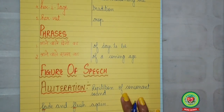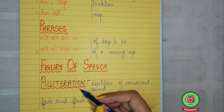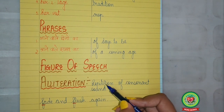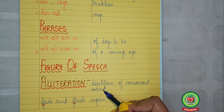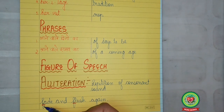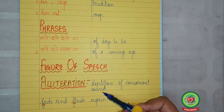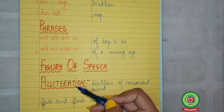The figure of speech used here is alliteration — the repetition of consonant sound. For example, 'fade and flush again.' Here, the F of 'fade' and the F of 'flush' is the repetition of consonant sound, so it is alliteration.